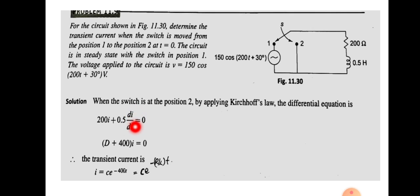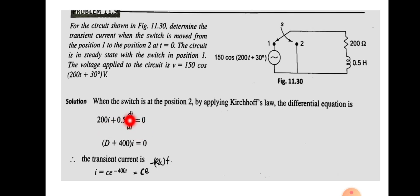Dividing the entire equation by 0.5, we get di/dt + 400i = 0. Using the D-operator notation, this becomes (D + 400)i = 0.